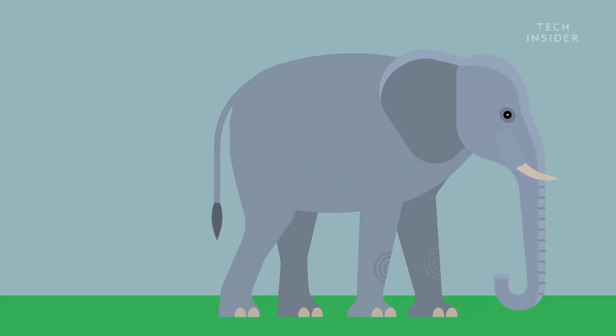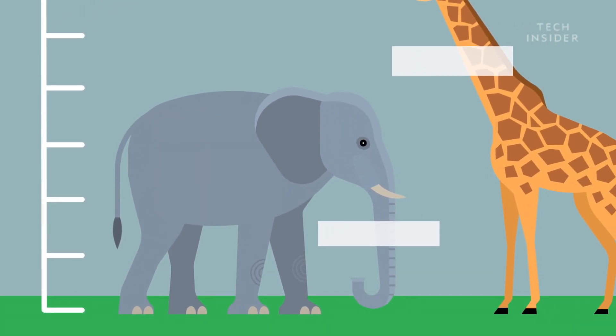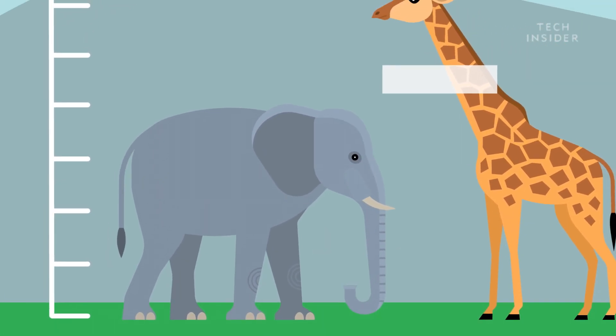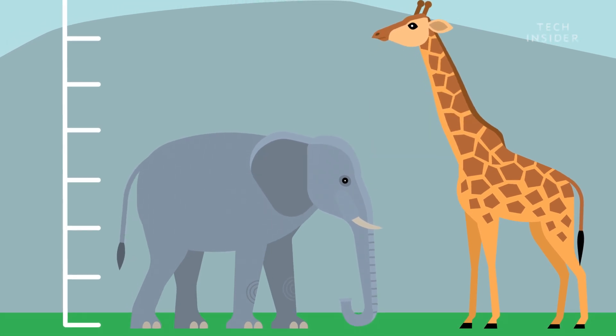If you measured this African elephant from shoulder to ground, it would actually be taller than a giraffe. But thanks to their long, strong necks, giraffes are the tallest animals alive.